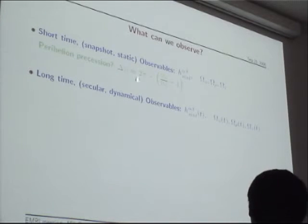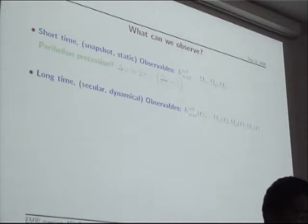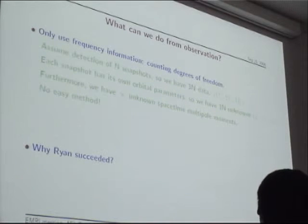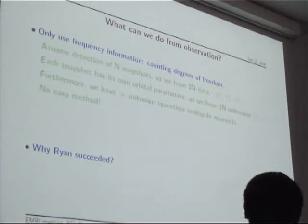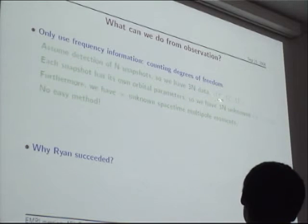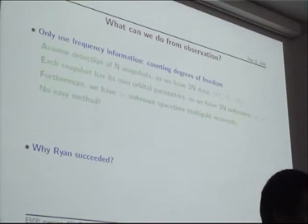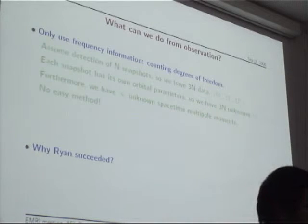If we observe for a long enough time, we can also observe the slow time evolution of these quantities — they will change on the radiation-reaction timescale. If we only use the frequency information — these three fundamental frequencies — let's count the degrees of freedom. Assuming we have detected n snapshots, we have 3n known data points. Each snapshot has its own orbital parameters, giving three unknown parameters per snapshot. Furthermore, we have an infinite number of spacetime multipole moments. So we have more unknowns than known data — it's not easy to do anything.